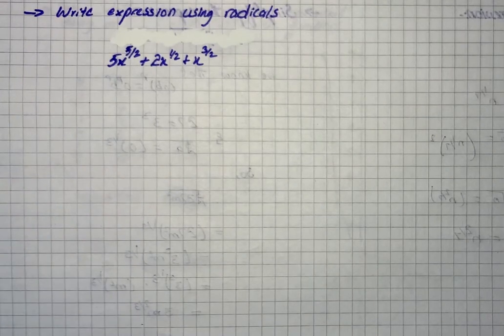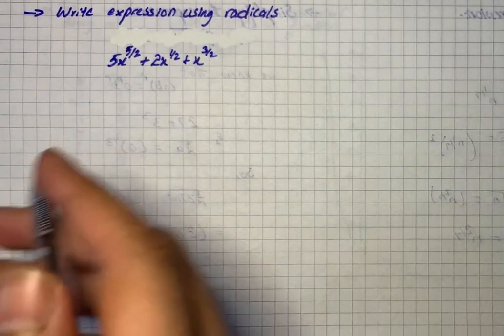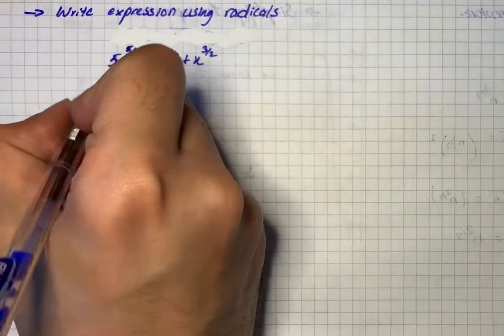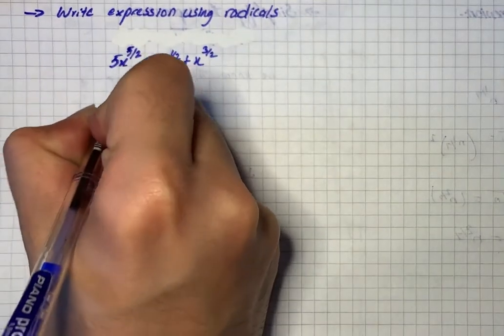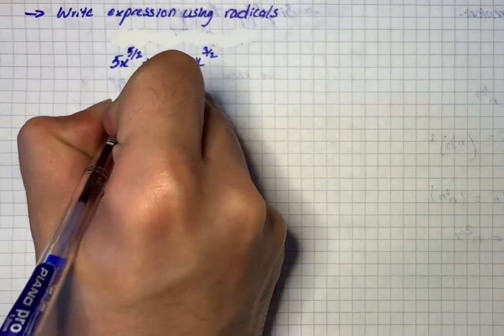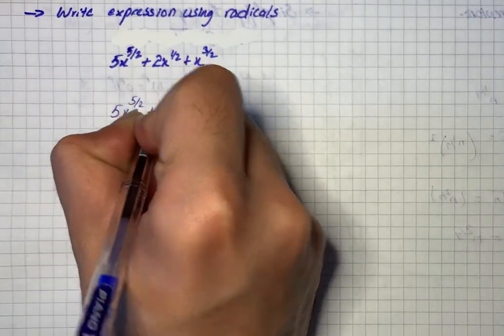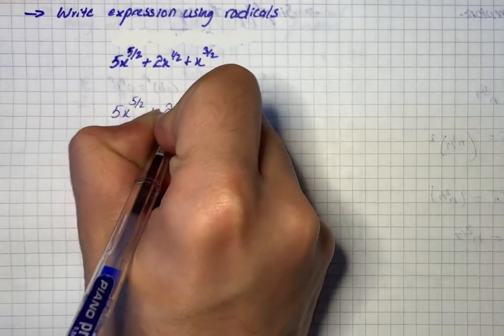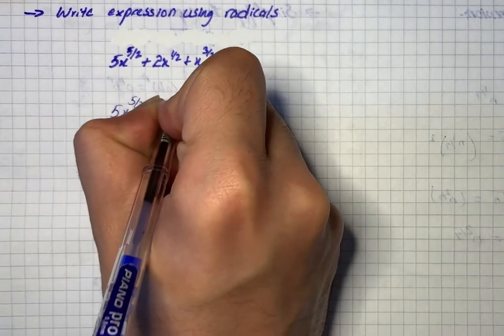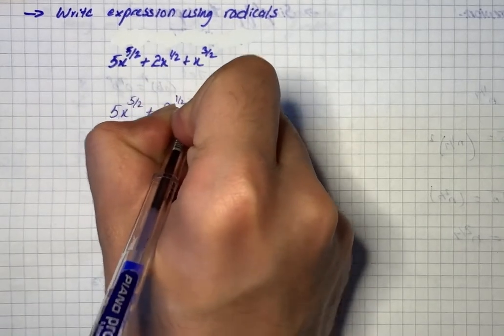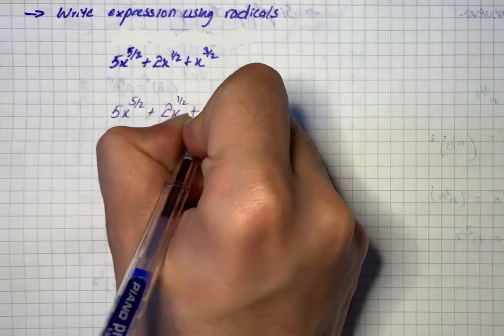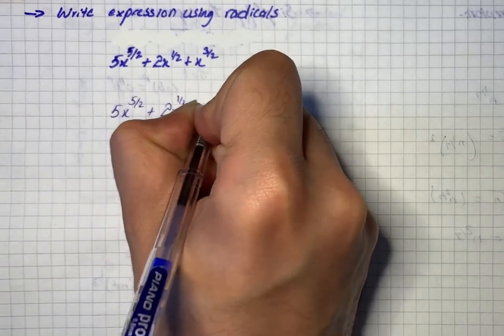Here we have a question where we have to write the expression using radicals. The expression is 5x^(5/2) plus 2x^(1/2) plus x^(3/2).